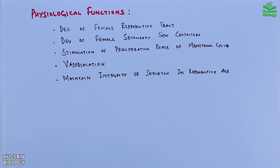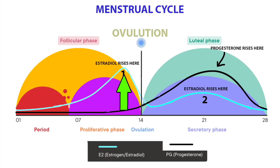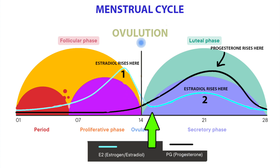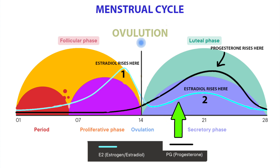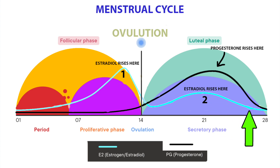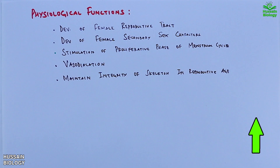Regarding estrogen's involvement in the menstrual cycle, estrogen levels rise and fall twice during the cycle. Estrogen levels rise during the mid-follicular phase as shown in the diagram, then drop steeply after ovulation. This is followed by a secondary rise during the mid-luteal phase, with a decrease at the end of the menstrual cycle, as depicted in the diagram.